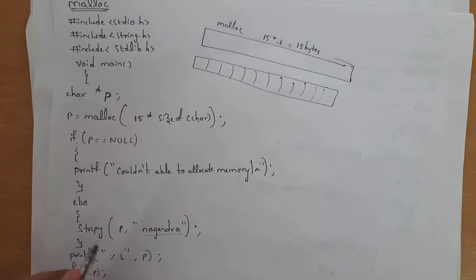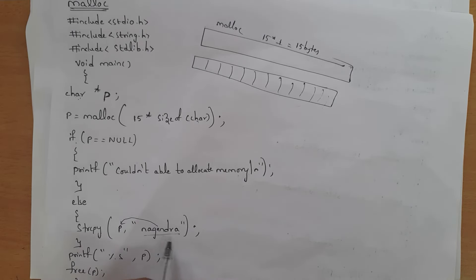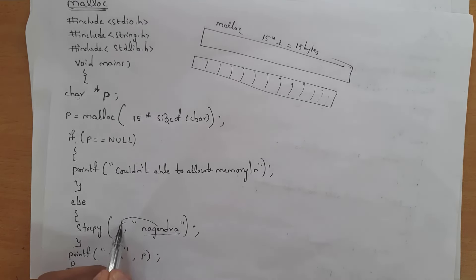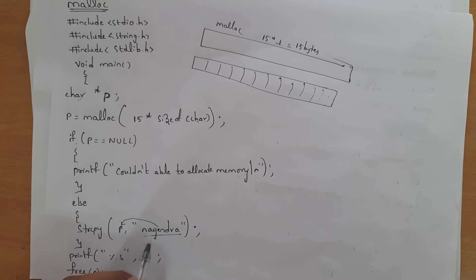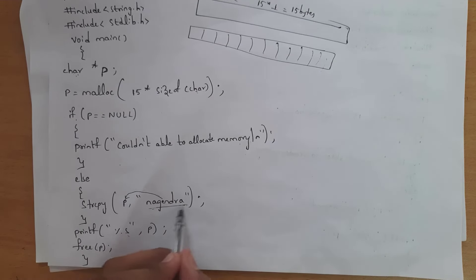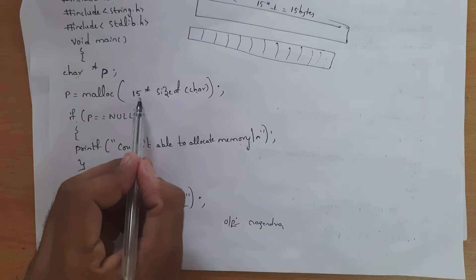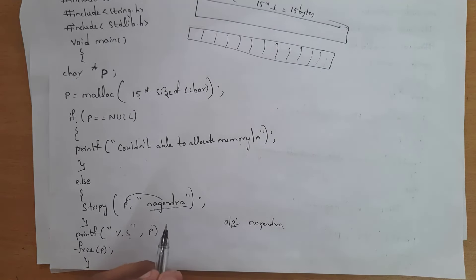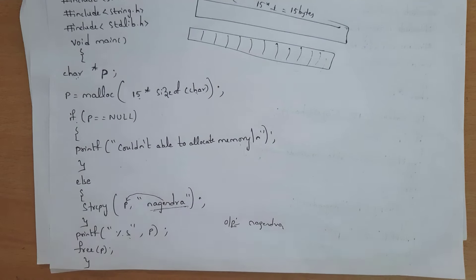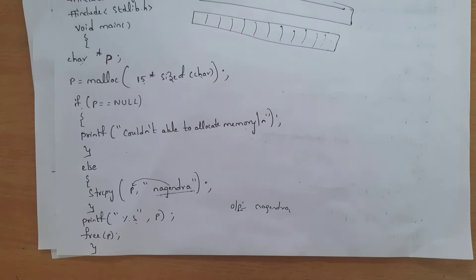If memory is present in our system, I want to transfer a string to pointer variable p. Using the strcpy function, I copy the text 'nagendra' into pointer variable p. Now pointer p contains 'nagendra'. I want to print this using printf with %s format specifier — printf("%s", p) — so the output will be 'nagendra'. Though I given size as 15, my text contains only 8 characters so it occupies only 8 bytes. At last I free the memory using free(p).